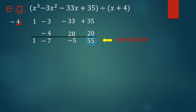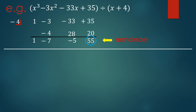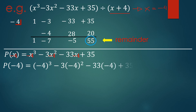Now let us validate if we get the same remainder using the evaluative process stated by the remainder theorem. The given polynomial is x cubed minus 3x squared minus 33x plus 35, and we evaluate it using the value of x from our divisor. Since our divisor is x plus 4, the value of x is negative 4. So P of negative 4 equals negative 4 raised to 3, minus 3 times negative 4 raised to 2, minus 33 times negative 4, plus 35.